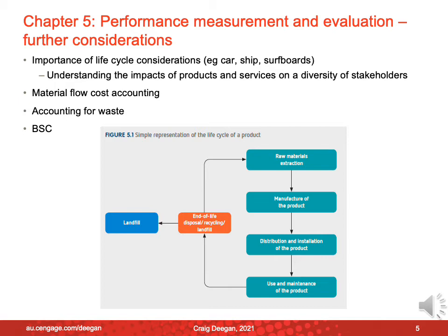The idea we embrace here is that we need to consider the life cycle of an organisation. A simple diagram here shows we need to consider issues due to raw material extraction, issues due to manufacture, then distribution, use and maintenance, and what happens to products at the end of the life cycle. While this life cycle analysis might not have been something done years ago, it's now very much something managers have to consider. We will consider material flow cost accounting, which looks at the different outputs related to products and how we might account for those, and we'll look in depth at accounting for waste, something that's becoming more and more important.